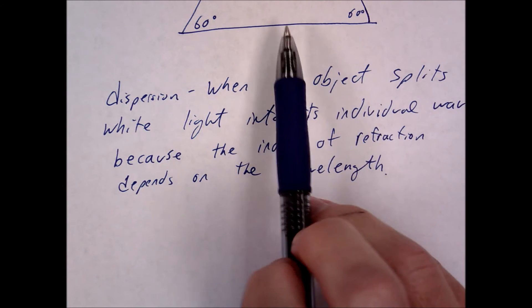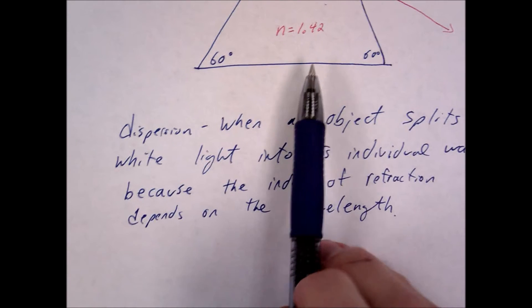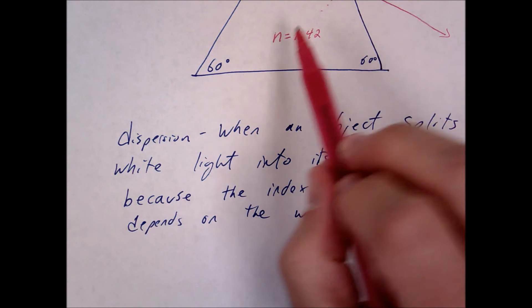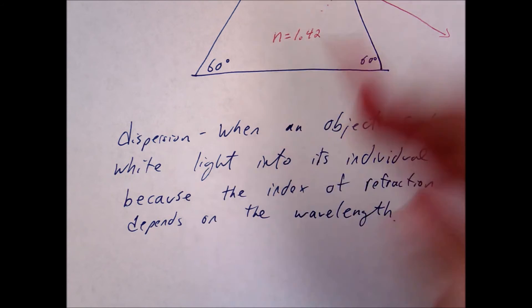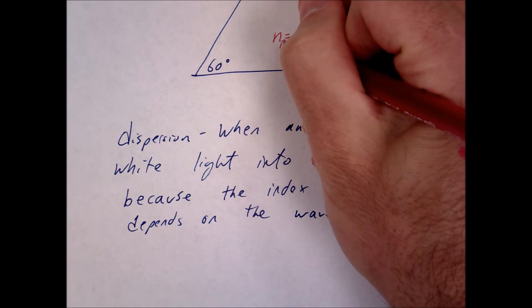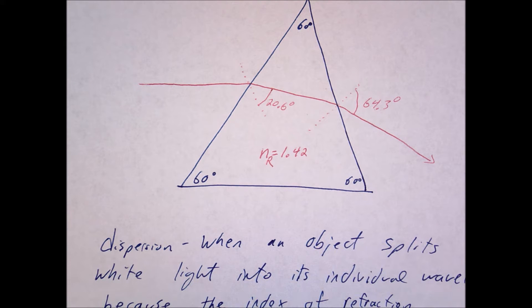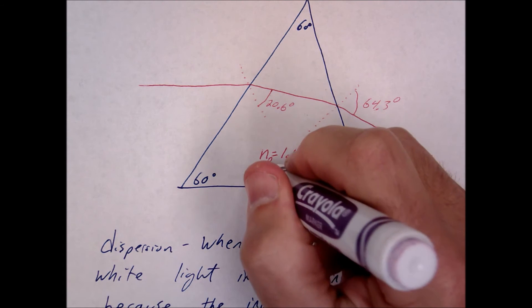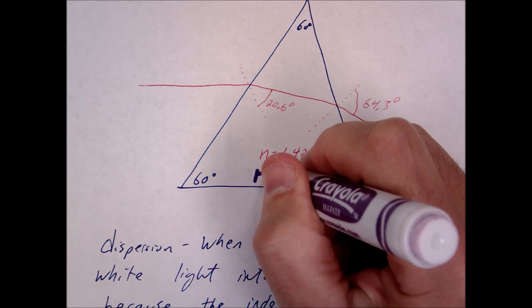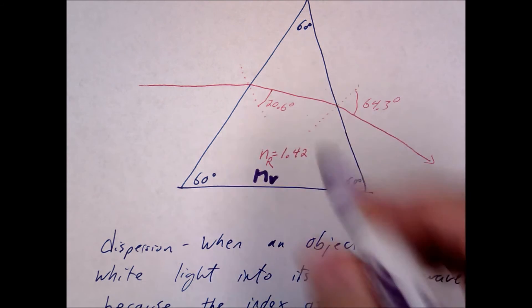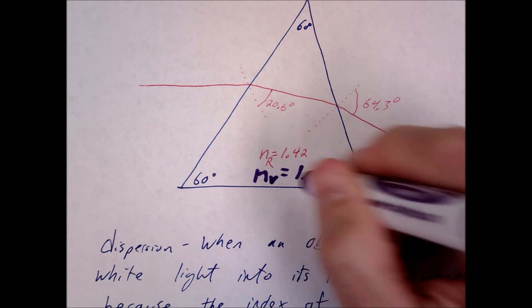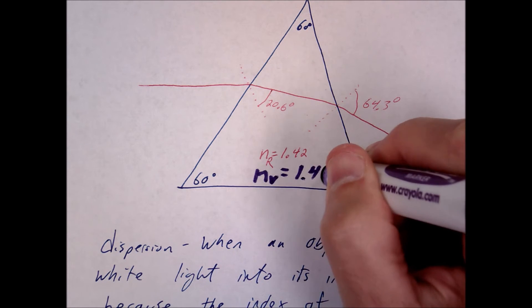So let's go back to our prism up here. I'm going to have you do this one more time now that you guys are wizards. So let's say this is 1.42. Let's say that's for red. What if n for violet? So if you have a purple, if you don't have purple, maybe you could use blue. Let's say for violet, it's 1.47.